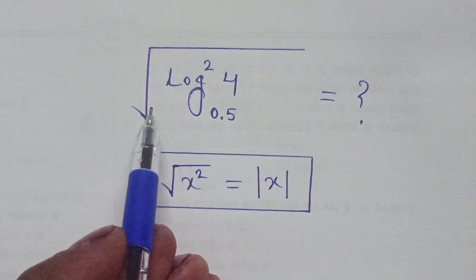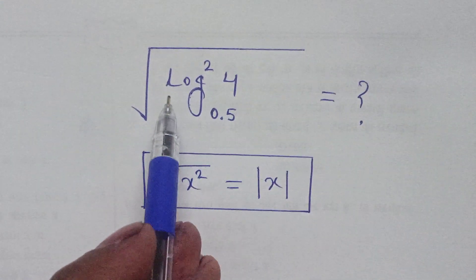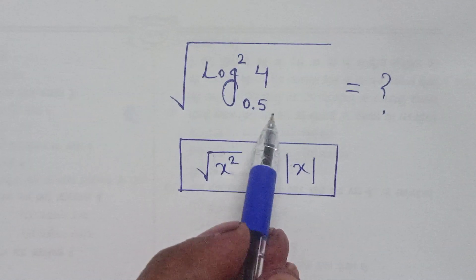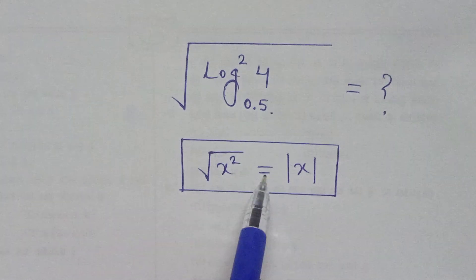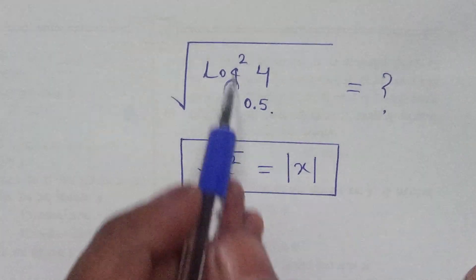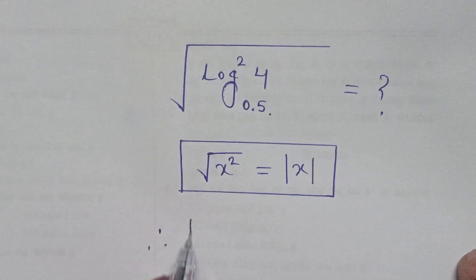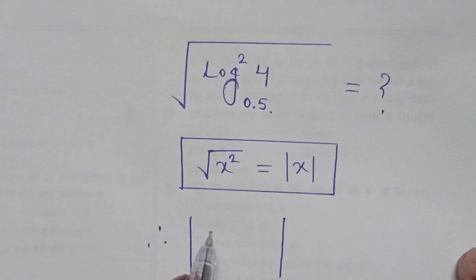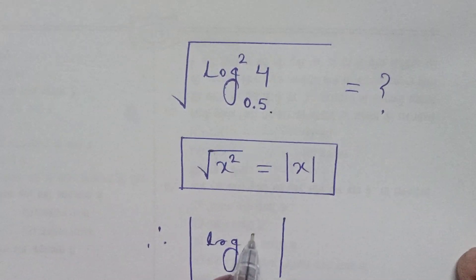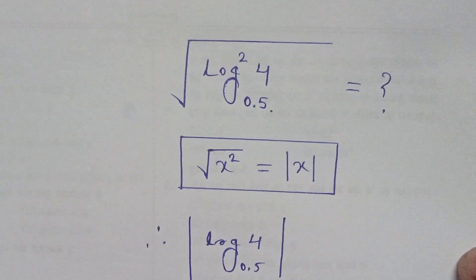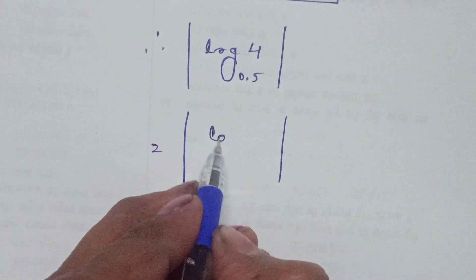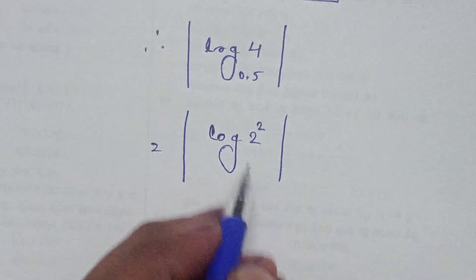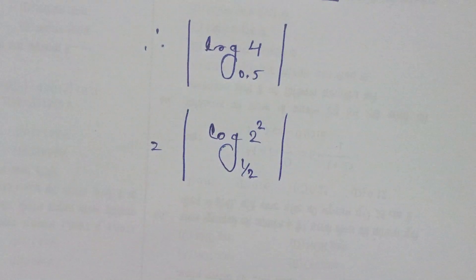The question is: find the value of √(log²₀.₅ 4). We know that √(x²) = |x|, therefore this is equal to |log₀.₅ 4|. Now, 4 can be written as 2², and 0.5 can be written as 1/2.